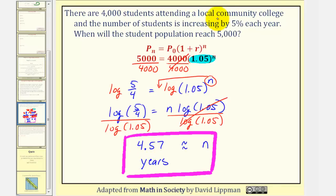Which means in this situation, it'll take approximately 4.57 years for the student population to reach 5,000. Let's take a look at a second example.